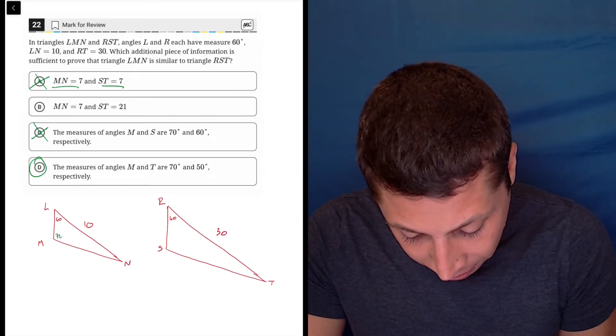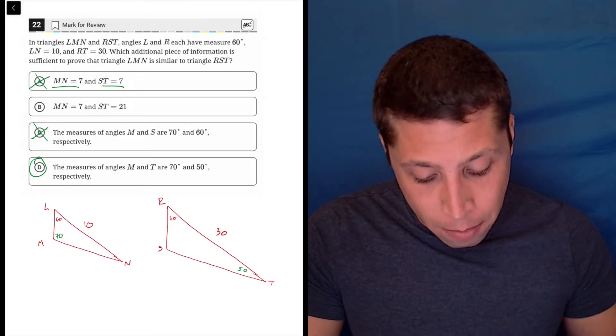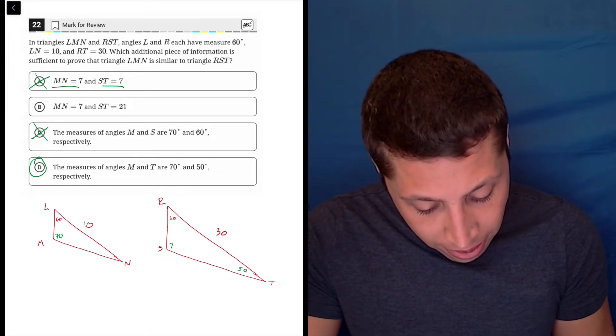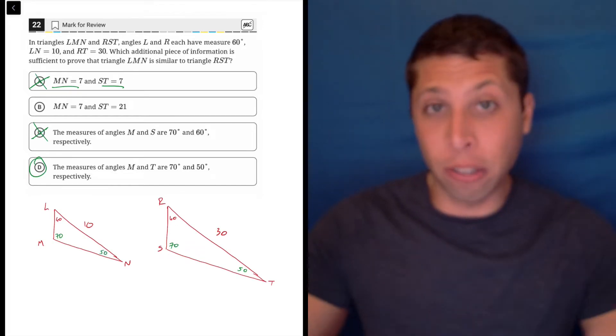Choice D is all about the angles. If we put those angles on there, we'd have M is 70, T is 50, so you're like, oh, those are different angles though, but if we filled in the missing ones, then S would be 70 and N would be 50, and we would see that the angles match up.